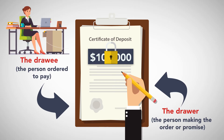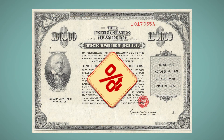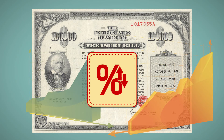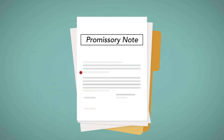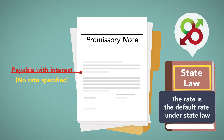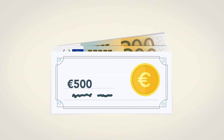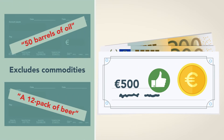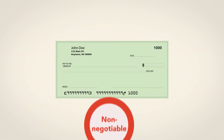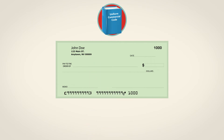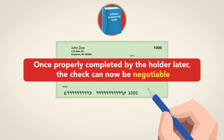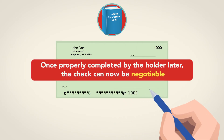To be negotiable, the amount must be fixed. However, repayment terms may feature variable rates of interest that are tied to financial indexes, such as those paid on U.S. Treasury bills. If the note specifies that it is payable with interest with no rate specified, then the rate is the default rate under state law, which is called the judgment rate. The negotiability requirement that an obligation be payable in money includes foreign currency, so a check for €500 can be a negotiable instrument, but excludes commodities, so a check written for 50 barrels of oil or a 12-pack of beer is not a negotiable instrument. A blank check is non-negotiable, but the code allows a holder to complete a blank check in the amount authorized. Once properly completed by the holder later, the check can now be negotiable.